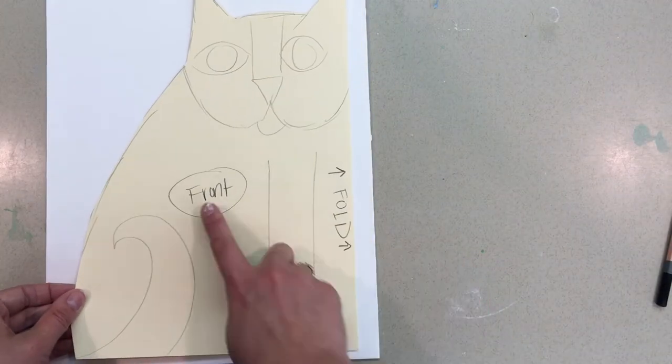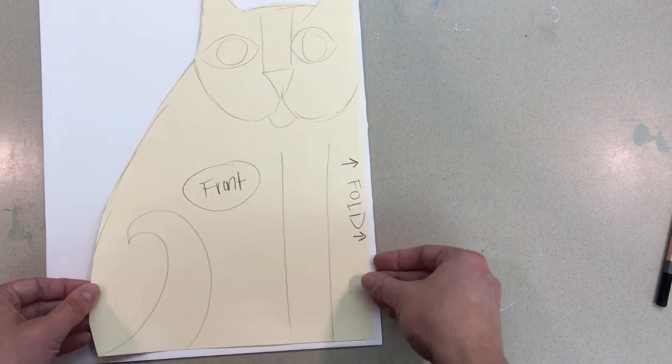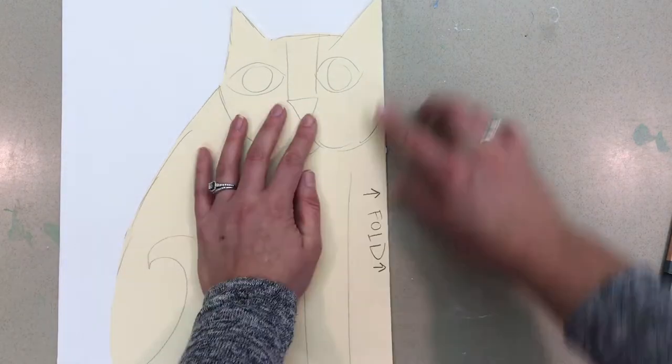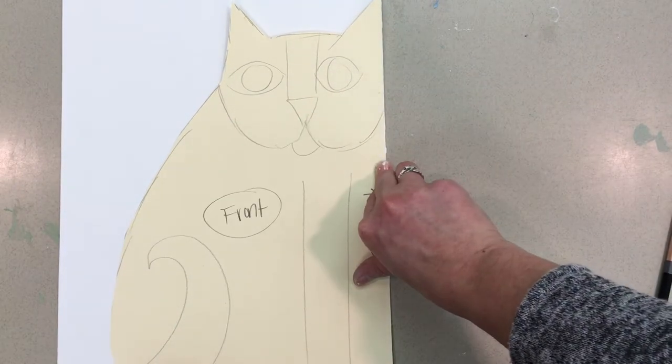Take your pattern, make sure it's on the front. Make sure the fold is lined up with your paper's fold and the bottom of your animal is at the bottom of your paper. Fold is on the right.